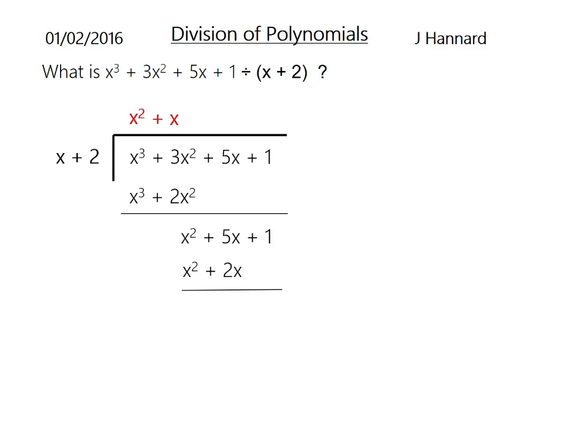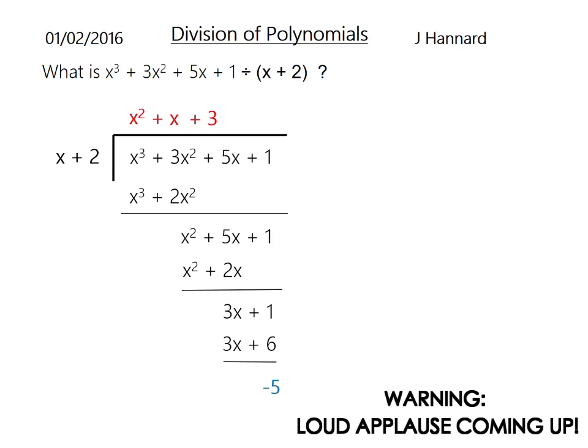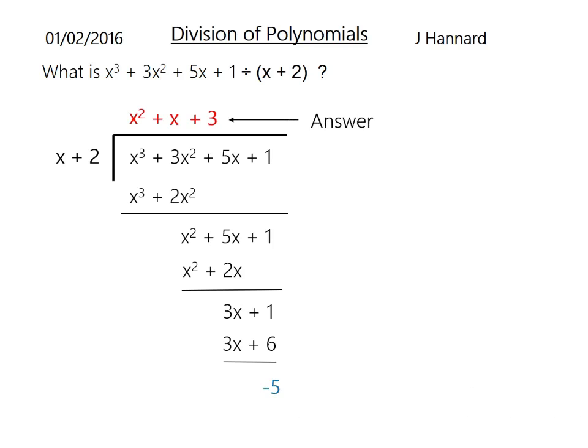We subtract again. x² minus x² is 0. Always will be if you're getting a remainder off that, you're doing it wrong. 5x minus 2x equals 3x. Then we ask ourselves, what do we times x by to get 3x? We'll say 3. Times the 3 by x + 2, then subtract again, and we end up with minus 5 at the bottom. That is our answer at the top and that is our remainder.